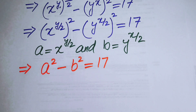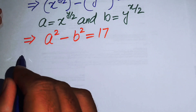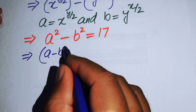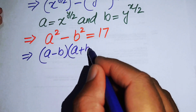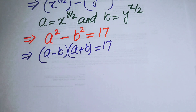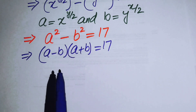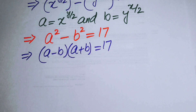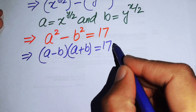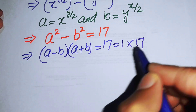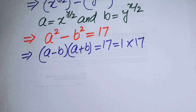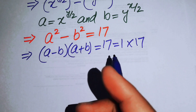We have the well-known difference of squares formula, so we open it as a minus b times a plus b equals 17. On the left we have two factors multiplied together, and on the right we have 17. Since 17 is prime, its only factors are 1 times 17.